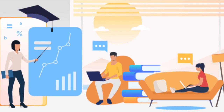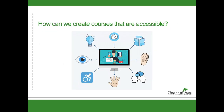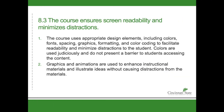Prioritizing accessibility also helps create a more diverse and supportive online learning community. Using Quality Matters Standard 8 as your guide, you can make your online course accessible by following a couple of simple steps. Using appropriate colors and fonts in online courses is essential for promoting accessibility, as it ensures readability and reduces strain for students with visual impairments or learning disabilities.